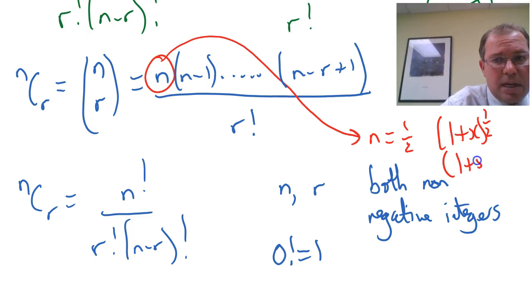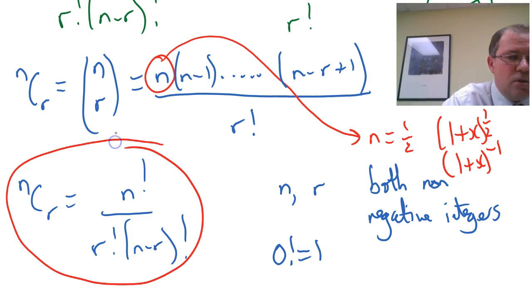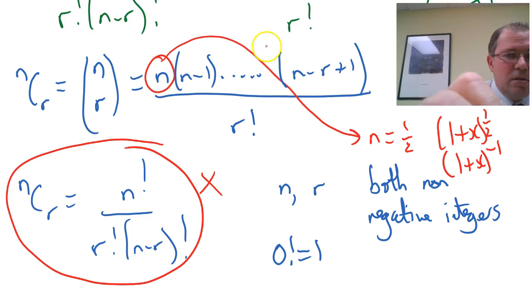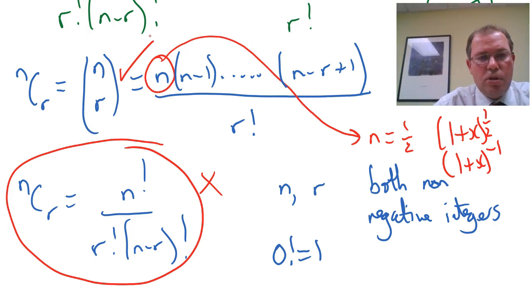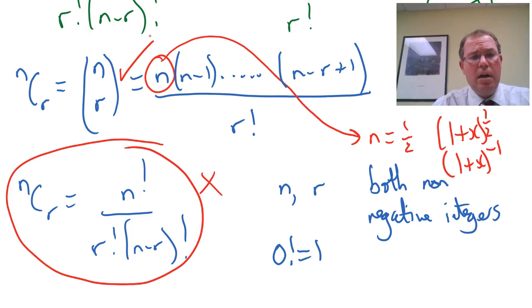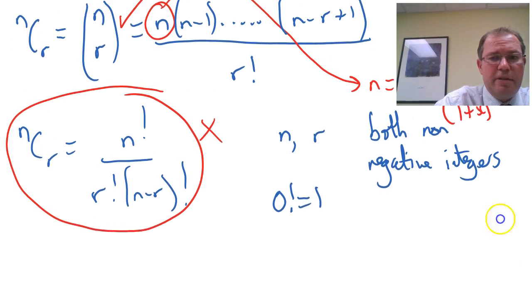And also, 1 plus x to the minus 1. Whereas, you cannot use n choose r for that. But you can use the nr for that. Also, we can use the nr notation to help us prove for non-negative integers the differentiation rule.